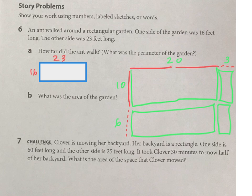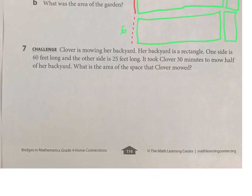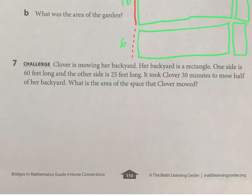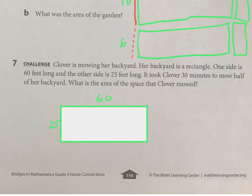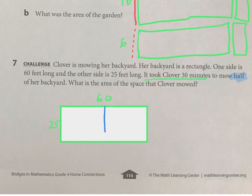For the challenge problem: Clover is mowing her backyard, which is a rectangle. One side is 60 feet and the other side is 25 feet. It took her 30 minutes, which is not really relevant. What is relevant is that she only mowed half of her backyard.